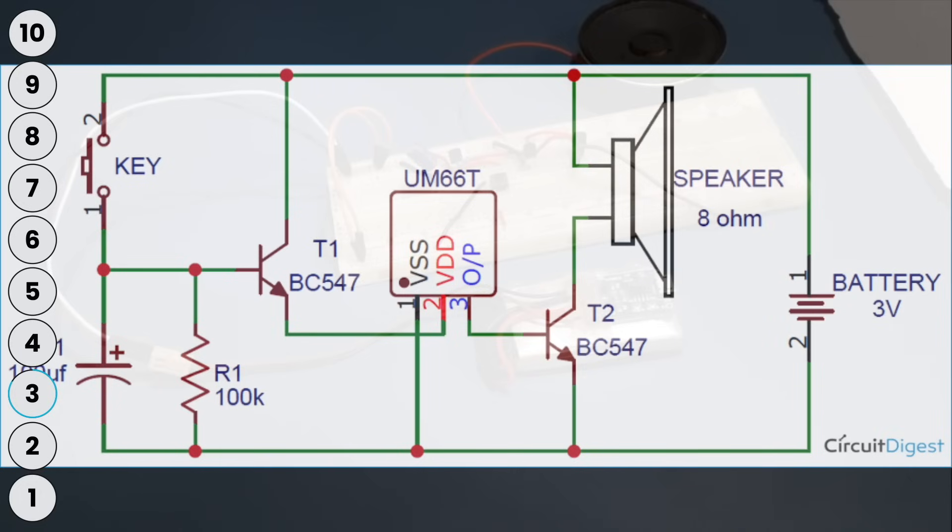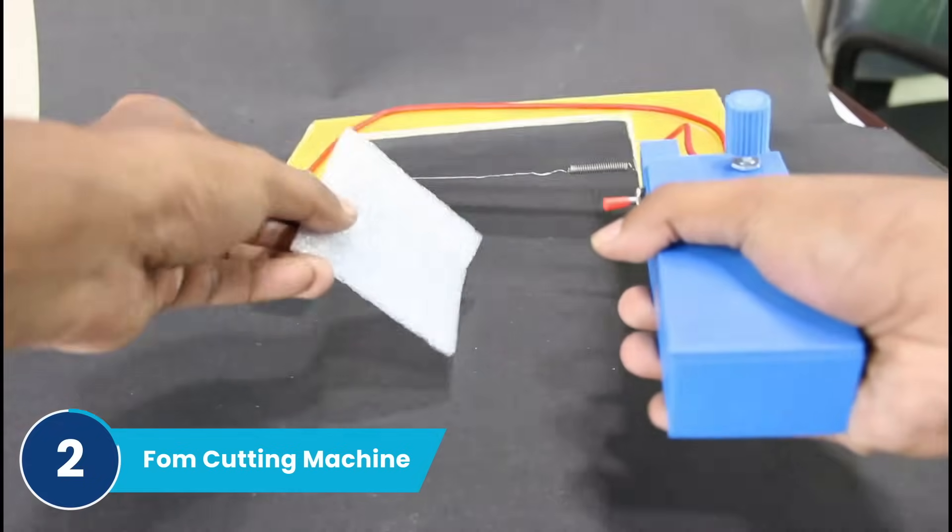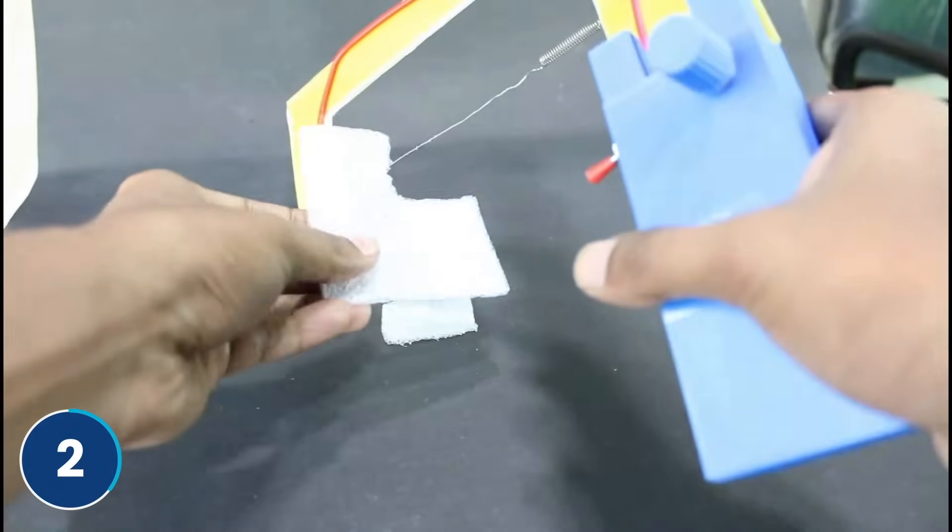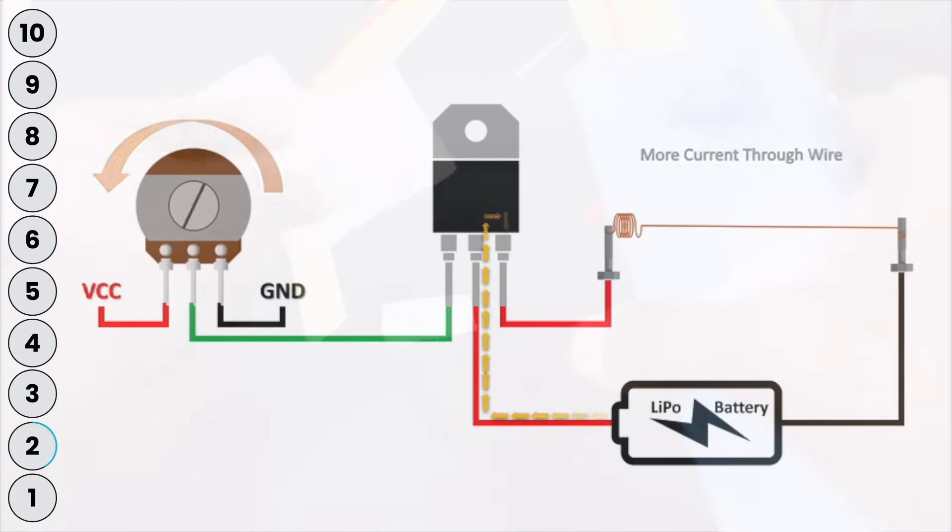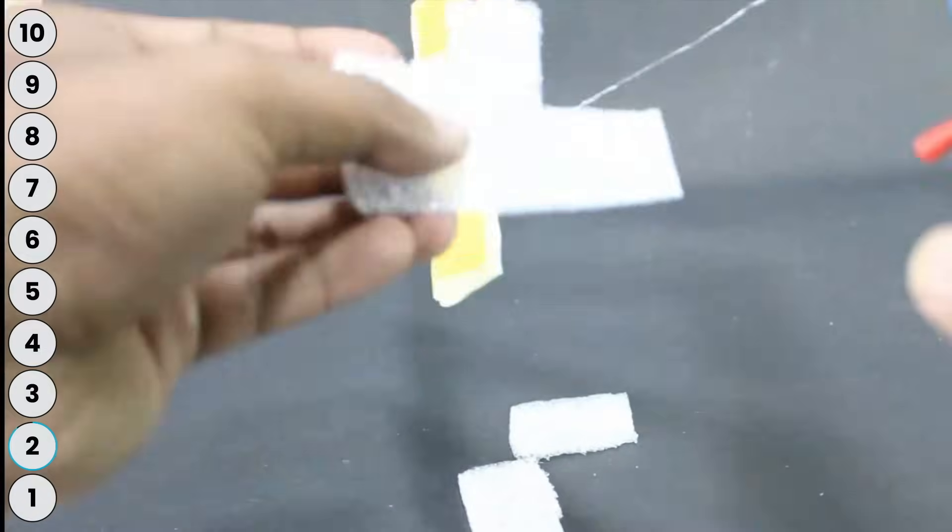Coming on at number two is a foam cutting machine which can be used to cut foam or thermocol in required sizes and shapes. It works by pushing a large amount of current into a nichrome wire using a lithium polymer battery. This current is controlled by a MOSFET with a potentiometer. This circuit does not involve any complicated ICs. It is easy to build and fun to use.